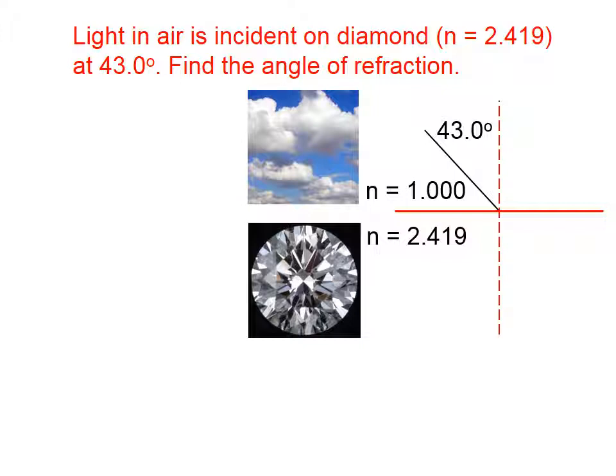Now, when light goes from a medium of lower index of refraction to a medium of higher index of refraction, it's going to bend towards the normal. So the answer that we're expecting should be less than 43 degrees. If that isn't what our calculator tells us, we know we've done it wrong.